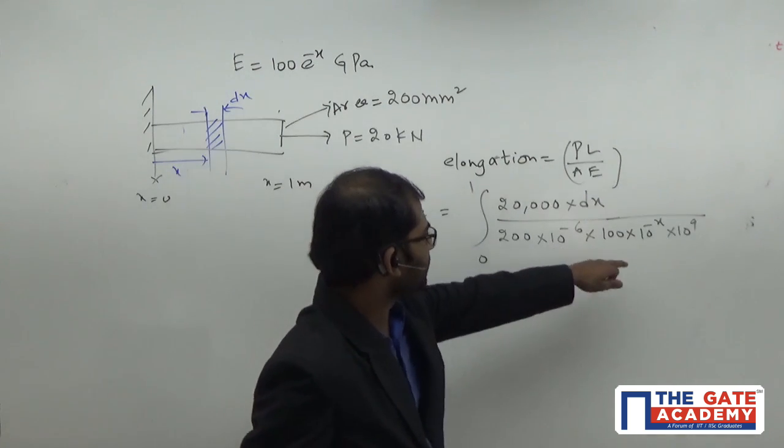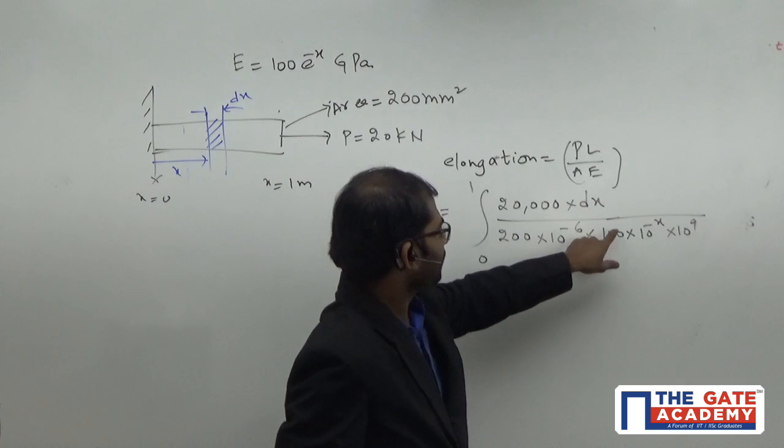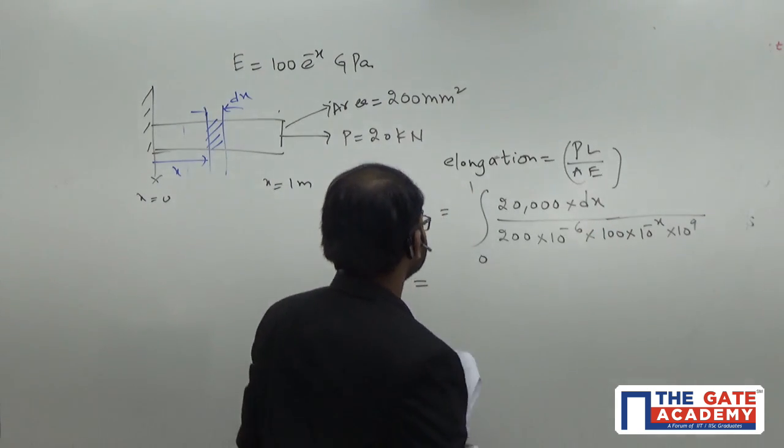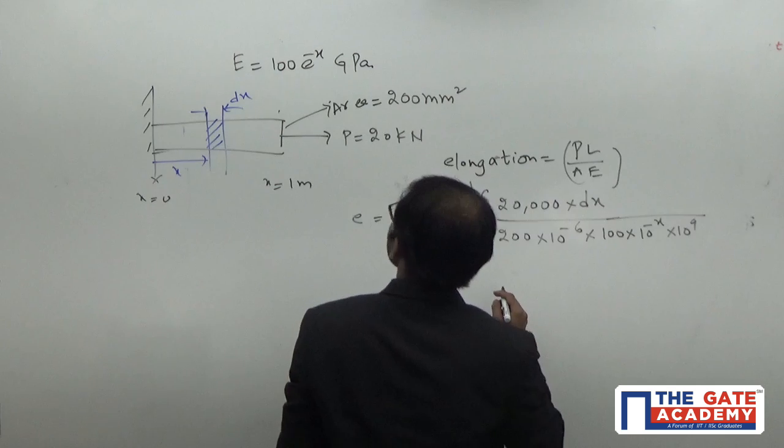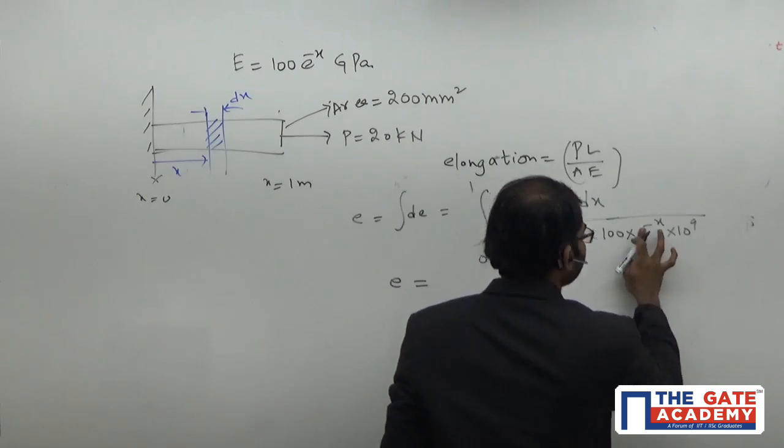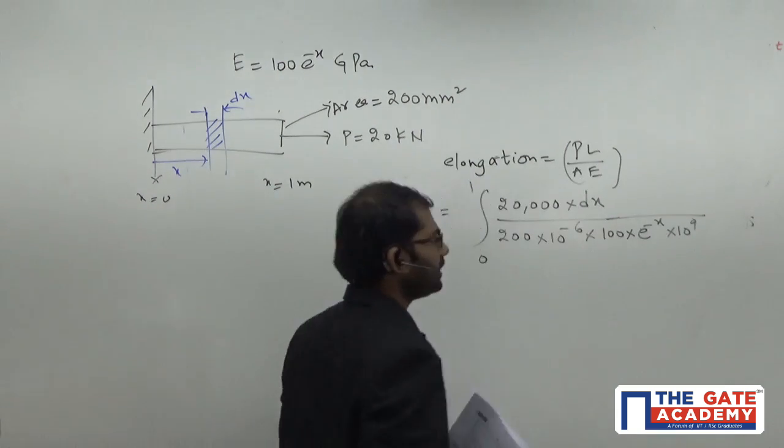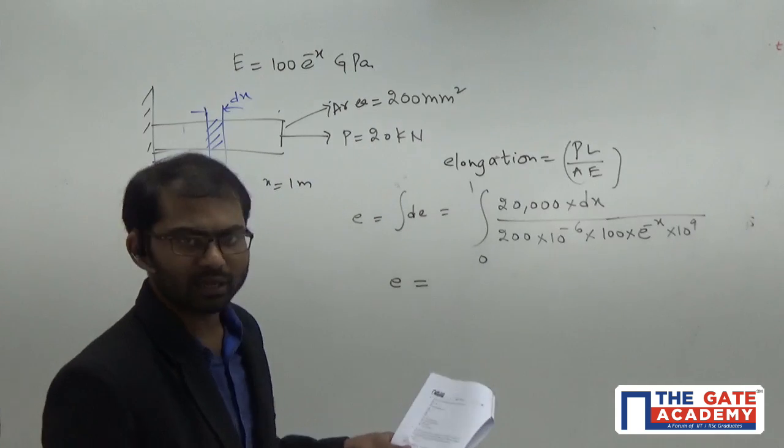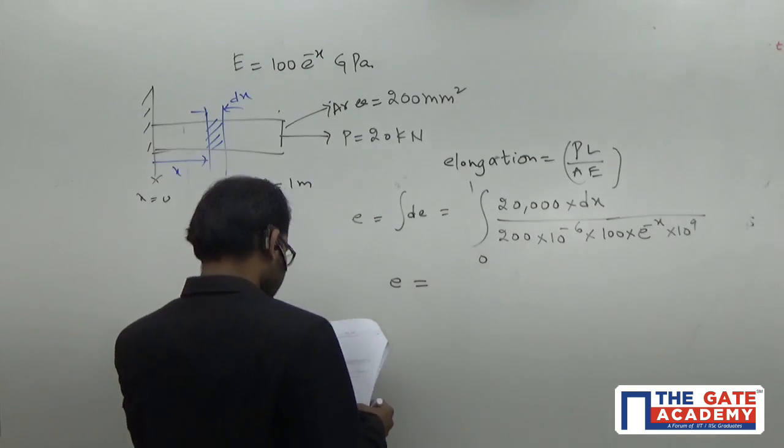These constants will be getting simplified. If you integrate this function after doing all these things, if you integrate this function 100 into e power of minus x, this is one, so 100 e power of minus x. If you substitute here, you're going to get the final answer.